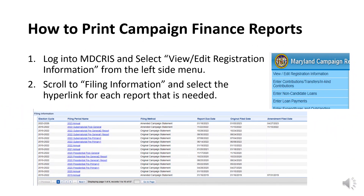To work through the remaining closure items, it is often necessary for the committee to have the most recent campaign finance reports available, either as an electronic PDF or printed. As a best practice, the committee should avoid using an old copy or a preliminary report since it might not reflect all activity if there were subsequent changes or amendments. To pull the most recent reports, navigate to the committee's registration page by selecting View/Edit Registration from the left side menu. Scroll about halfway down the page to Filing Information. Once located, select the blue hyperlink for each report to download, print, or view.